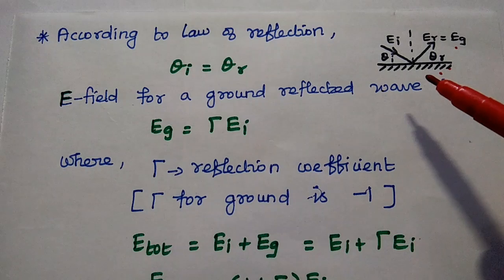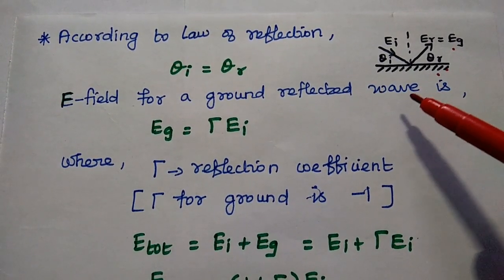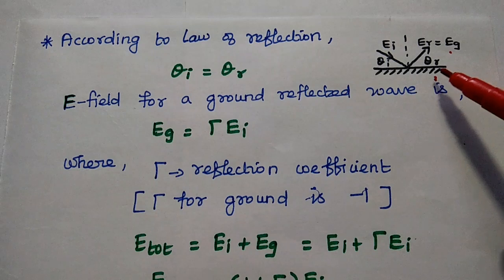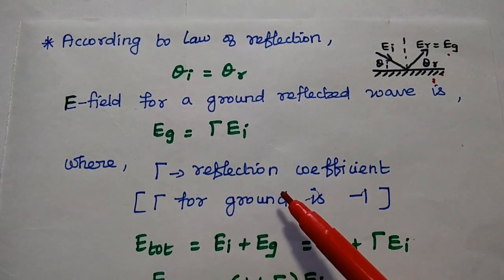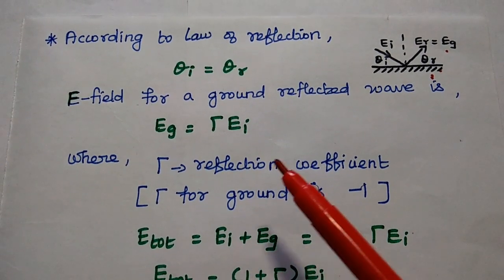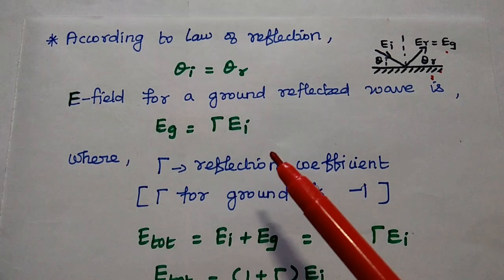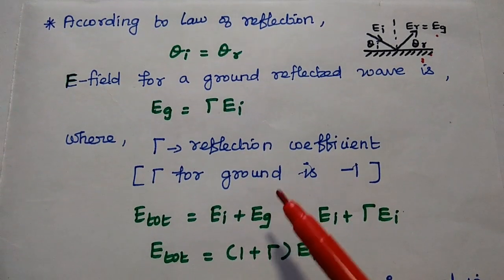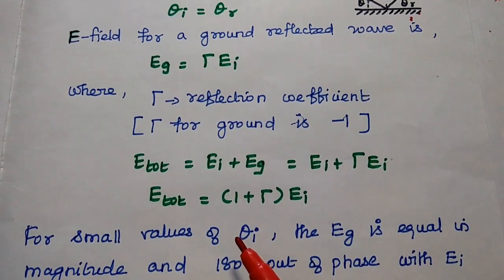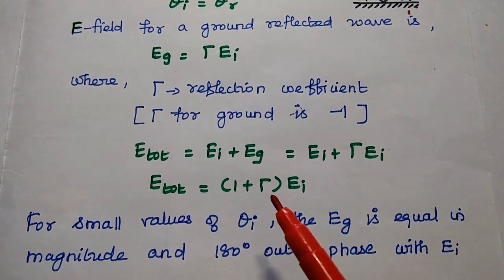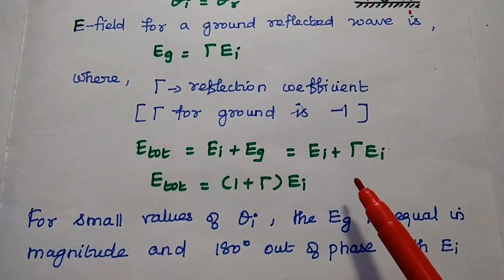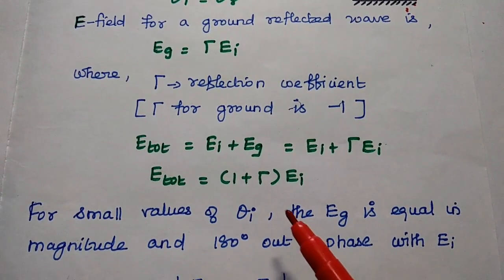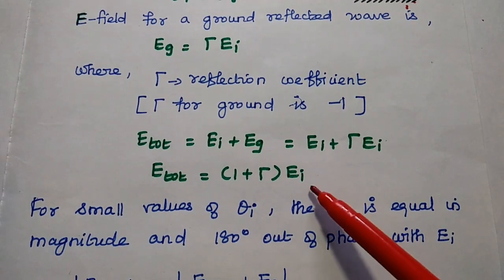Before finding the total electric field, we must understand the concept of the reflection coefficient. According to the law of reflection, the incidence angle equals the reflected angle. For a ground reflected wave, the electric field can be represented as EG = gamma * EI, where EI is the incident electric field. Here gamma is the reflection coefficient, and its value is -1. So the total electric field equals the incident plus the reflected: EI + gamma*EI = (1 + gamma)*EI. This is the general consideration.